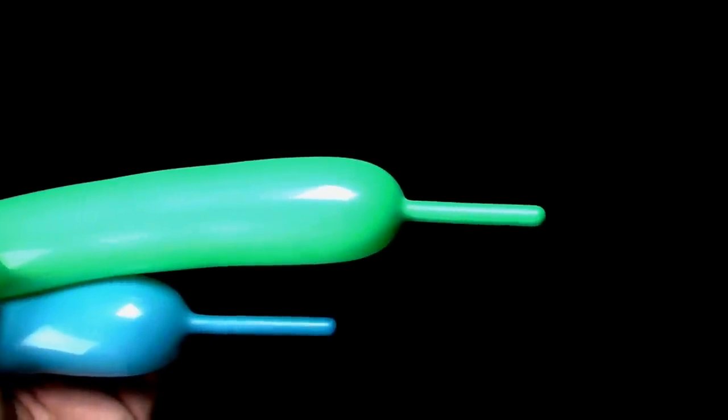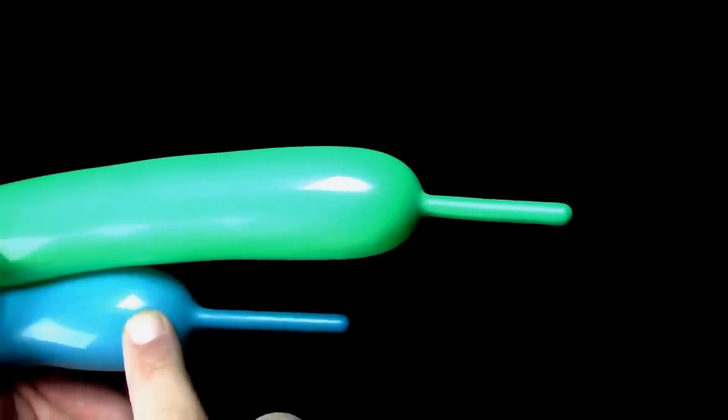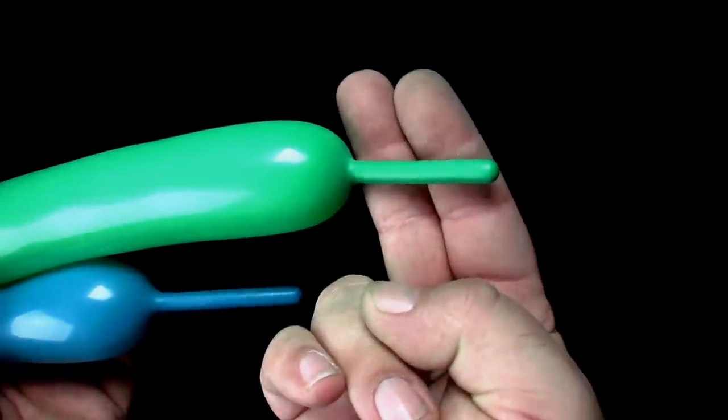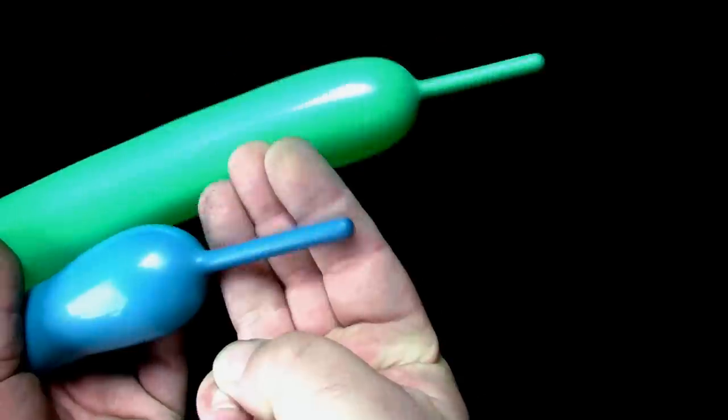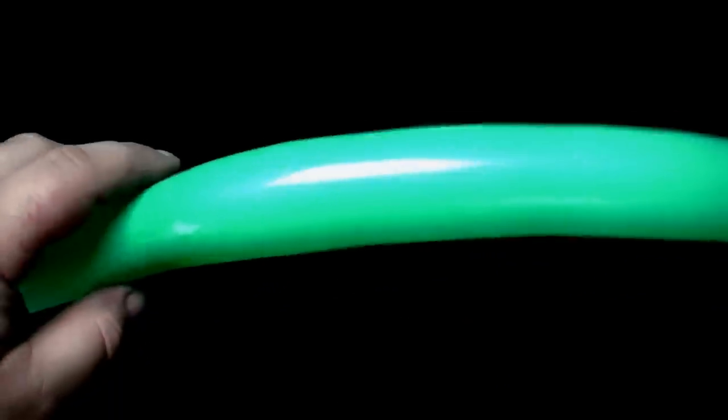You will need two 260 balloons, one for the stem and one for the petals. Fill the balloon for the stem with about two fingers width left over at the end. The balloon for the petals will need about three fingers width left over at the end.